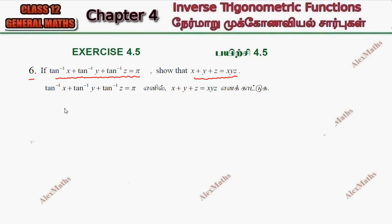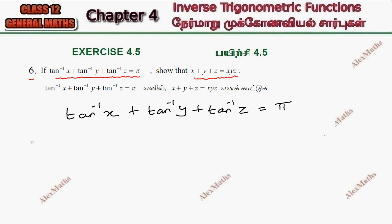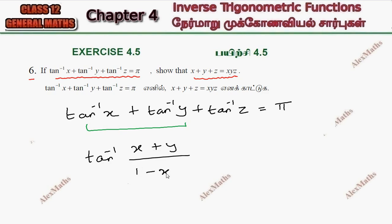We apply the formula to the given expression. We have 3 terms: tan inverse x plus tan inverse y plus tan inverse z equals pi. Now applying the addition formula, tan inverse x plus y over 1 minus xy is equal to pi.